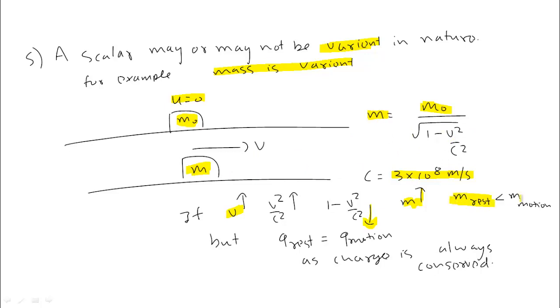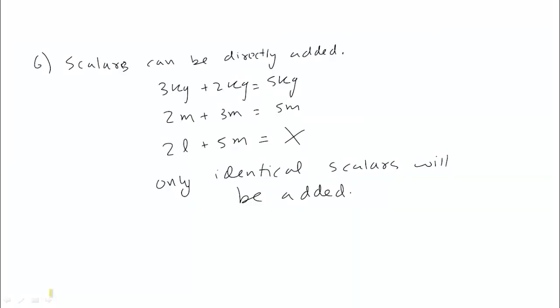So mass at rest is smaller than mass in motion, because mass increases with velocity. But charge at rest and charge in motion remain the same. For example, if you put some charge on it, the charge value doesn't change. Charge is an example of invariant scalar; mass is an example of variant scalar.